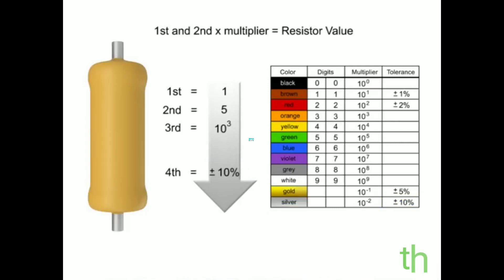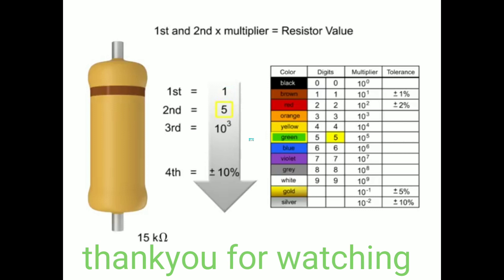Now let's determine what the bands would be on a 15 kilo ohm resistor. Since the first digit is one, the first band would need to be brown. The second digit is five, so the band color would need to be green.